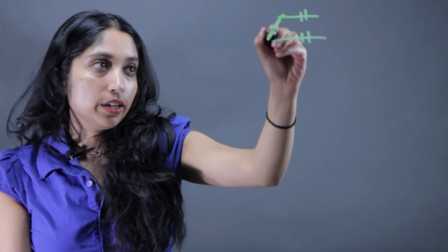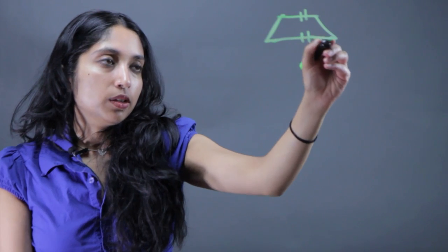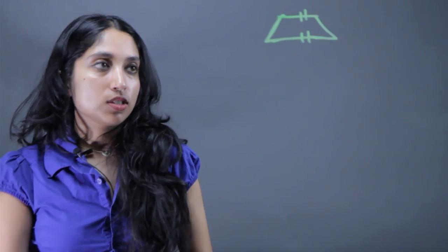So to review, a trapezoid is simply a four-sided polygon that has only one set of parallel sides. So these two sides right here cannot be parallel but these two sides have to be. So one pair of parallel sides gives us a trapezoid.